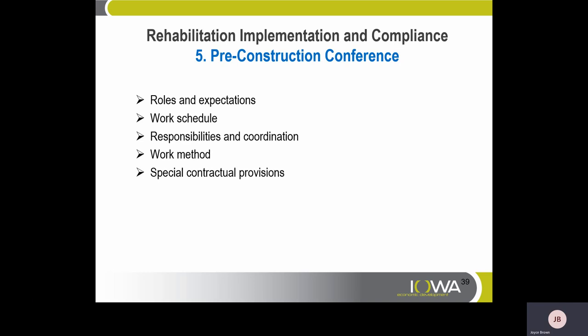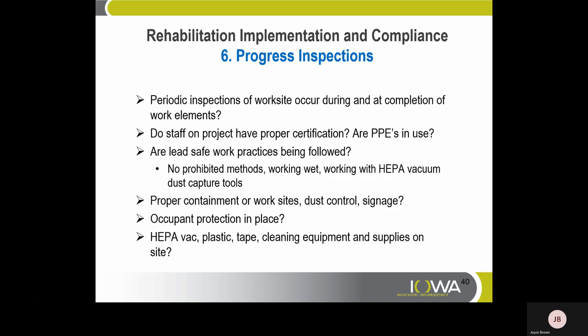Stage five — Pre-Construction Conference. This includes roles and expectations, the work schedule, responsibilities and coordination, the work method, and special contractual provisions. Step six — Progress Inspections. Periodic inspections of the work site occur during and at completion of work elements. Do staff on projects have proper certifications? Are PPEs in use? Are lead-safe work practices being followed? No prohibited methods — working wet, working with HEPA VAC, dust capture tools. Proper containment of work sites and dust control signage should be in place.